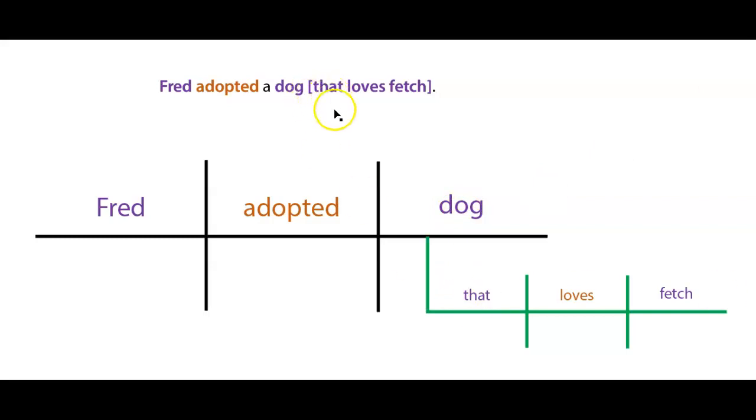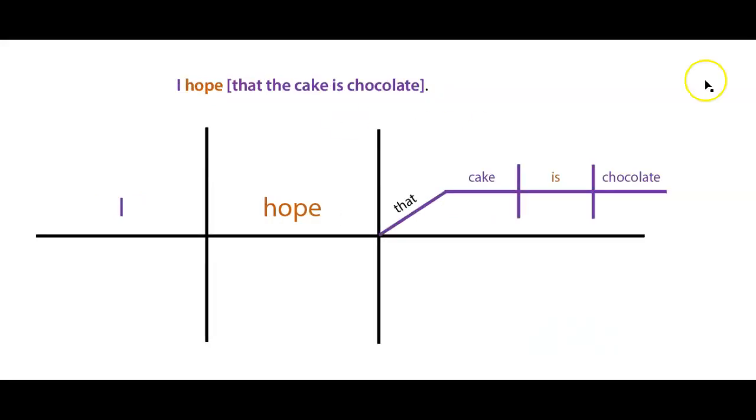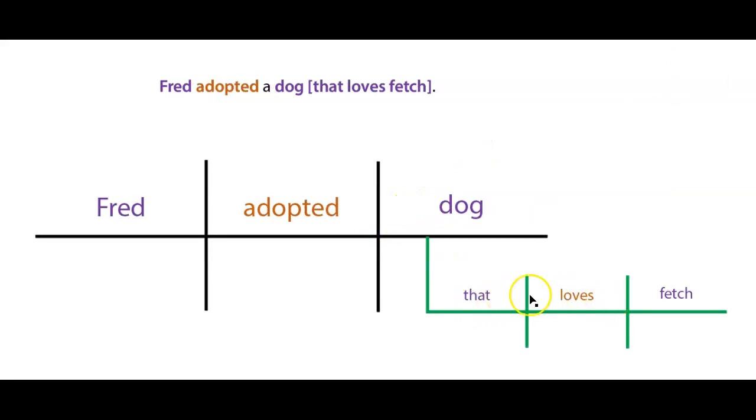And you'll notice the word that is not an intro word here. The word that is a representative. And so it's a pretty big difference, right? So this thing, the word that is an intro word. This thing, the word that is an active part of the modifying clause. This is going to be a key difference between noun clauses and adjective clauses.